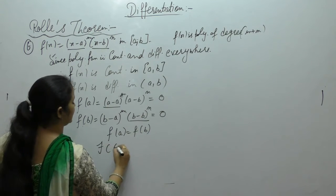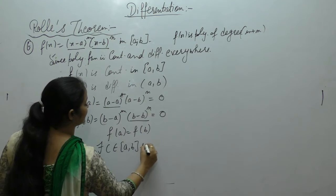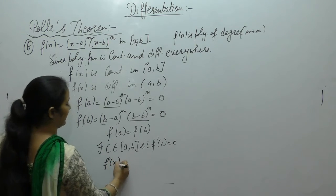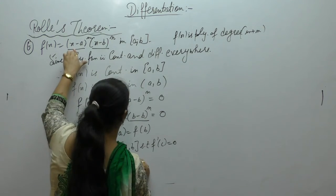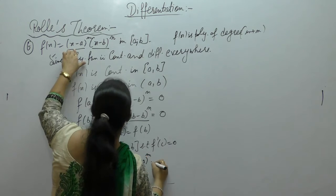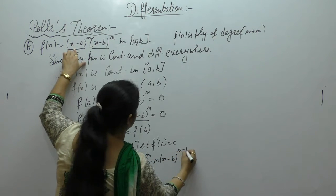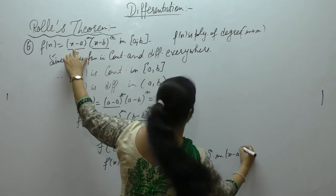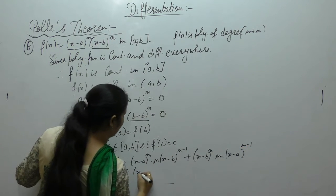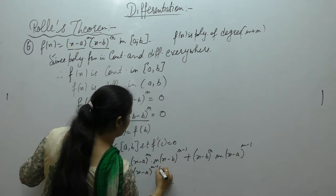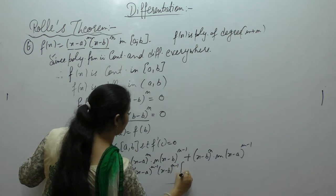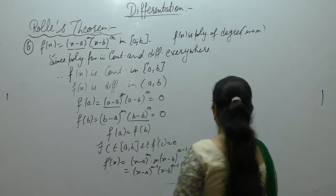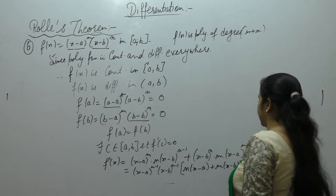Therefore, there exists c in (a,b) such that f'(c) = 0. Now find f'(x) by applying the product rule (u·v rule): first function times derivative of second, plus second function times derivative of first.